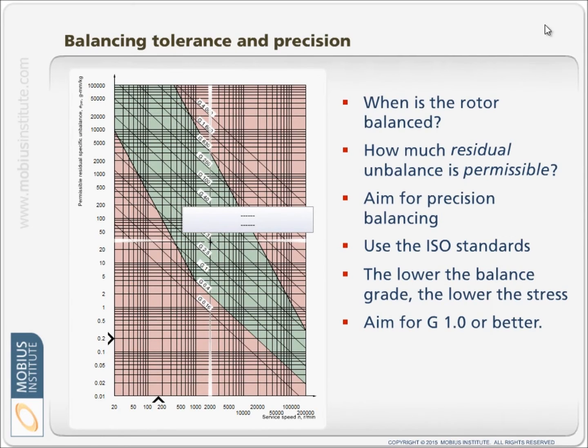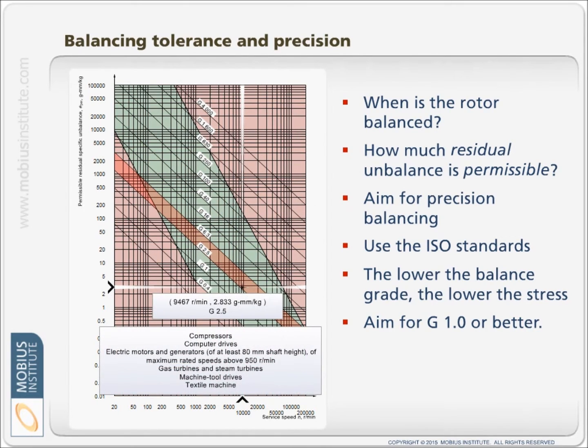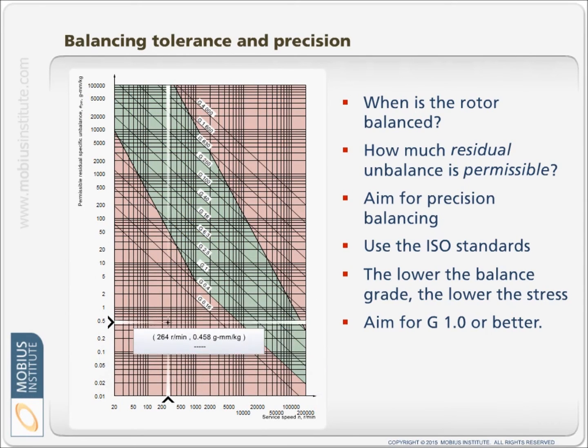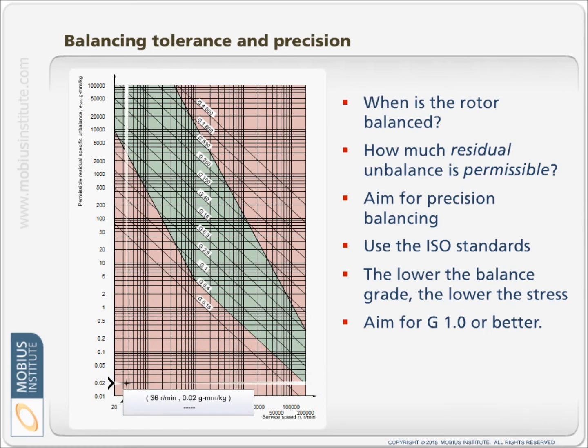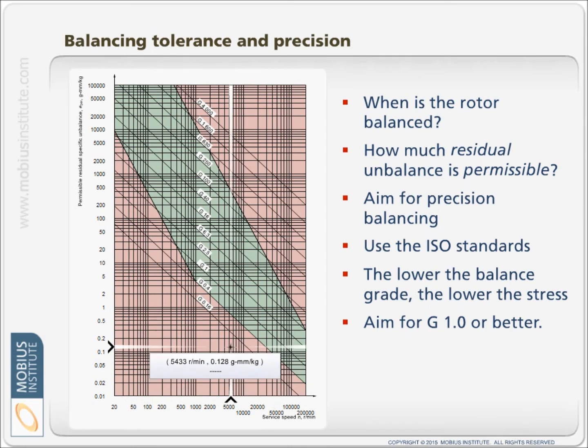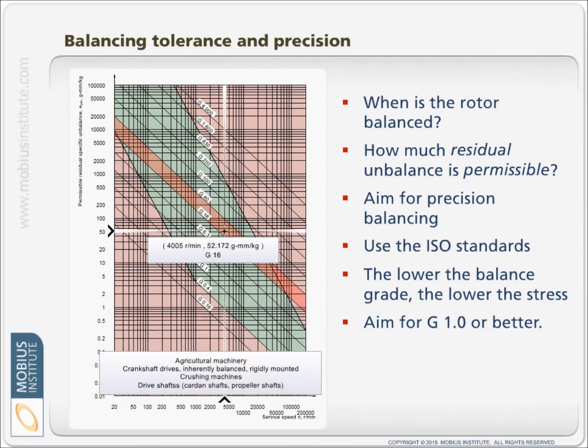Now I mentioned this just a moment ago, but when is the rotor balanced? In my little example a moment ago the vibration was reduced to a certain level. And we might say well that amplitude is much better than what we had, so the job is done. But the job isn't done until it is precision balanced. Now there is an ISO standard where you can either calculate or use a chart to say what is the speed of the rotor and what amount of residual or remaining unbalance is permissible or allowable.